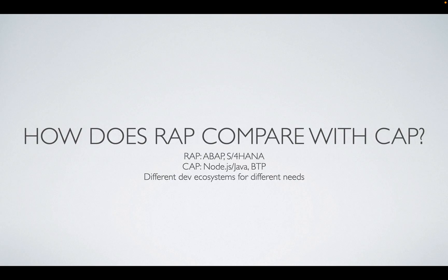How does RAP compare with CAP? RAP (RESTful Application Programming) is based on the ABAP language, whereas CAP (Cloud Application Programming) is based on Node.js and Java. RAP can be used in S/4HANA on-premise and cloud, while CAP is focused only on BTP. RAP is for ABAP developers, while CAP is for full-stack non-ABAP developers. RAP uses CDS behavior definitions, while CAP uses CDS annotation services.